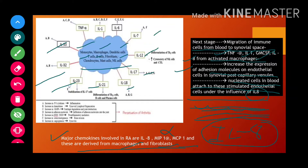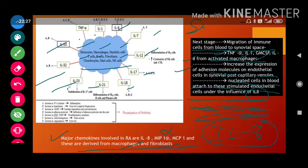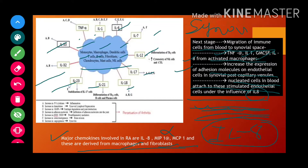Each of these cell types has different functions, and their particular effect is on the synovial fluid — that is, the synovial joints. We can see that inflammation occurs here. This is the complete mechanism of rheumatoid arthritis.